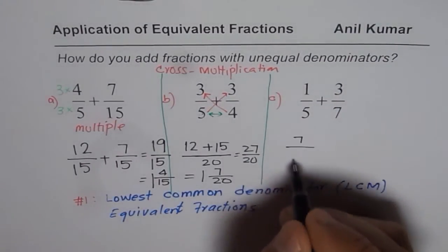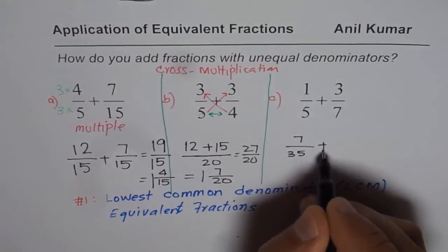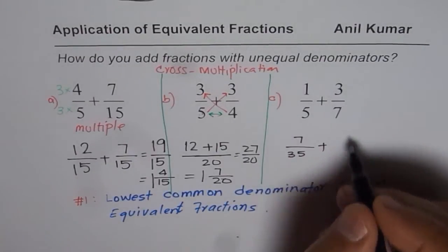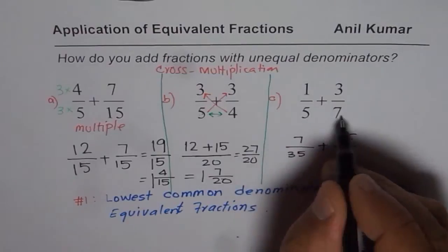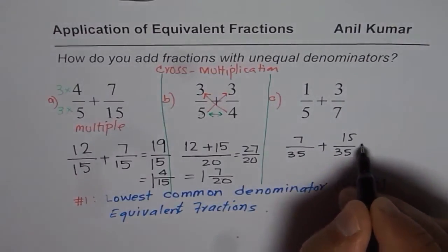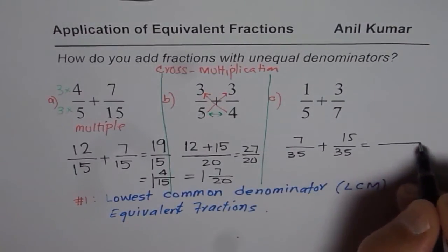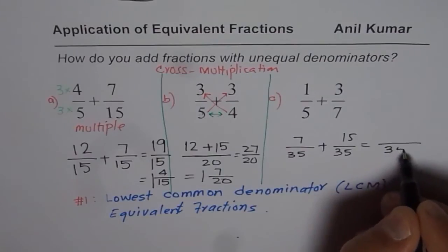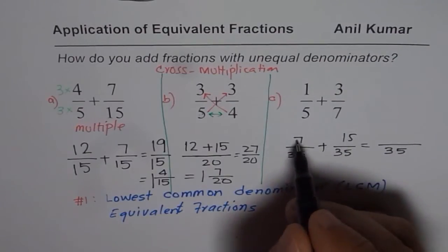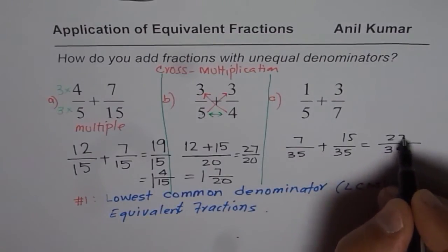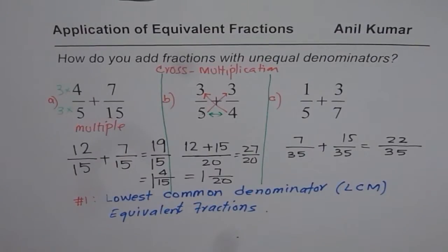So when you do seven times one, you get seven. Seven times five, 35. Plus five times three, 15. And five times seven, 35. Adding them up, denominator is always same, which is 35. Seven plus 15 is 22. So that is your final result.